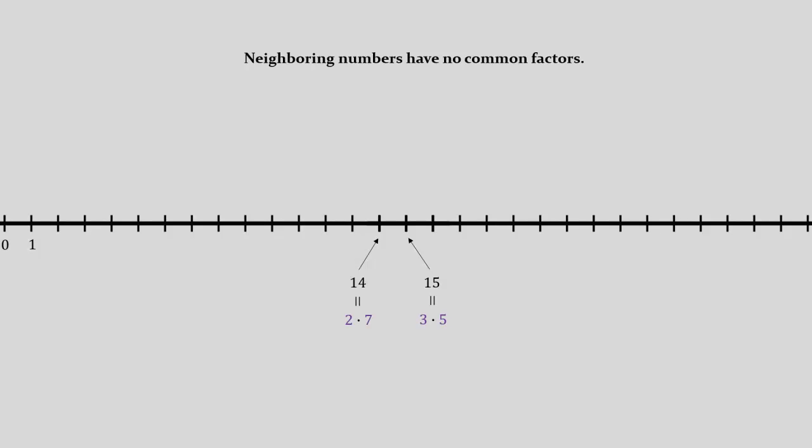Pick another pair of neighbors, say 23 and 24. Well, 23 itself is prime, so its prime factorization is just 23. On the other hand, its neighbor 24 breaks down into 3 factors of 2 and 1 of 3. And so we see our result once again. These neighboring numbers have no common factors. Beyond 1, of course.